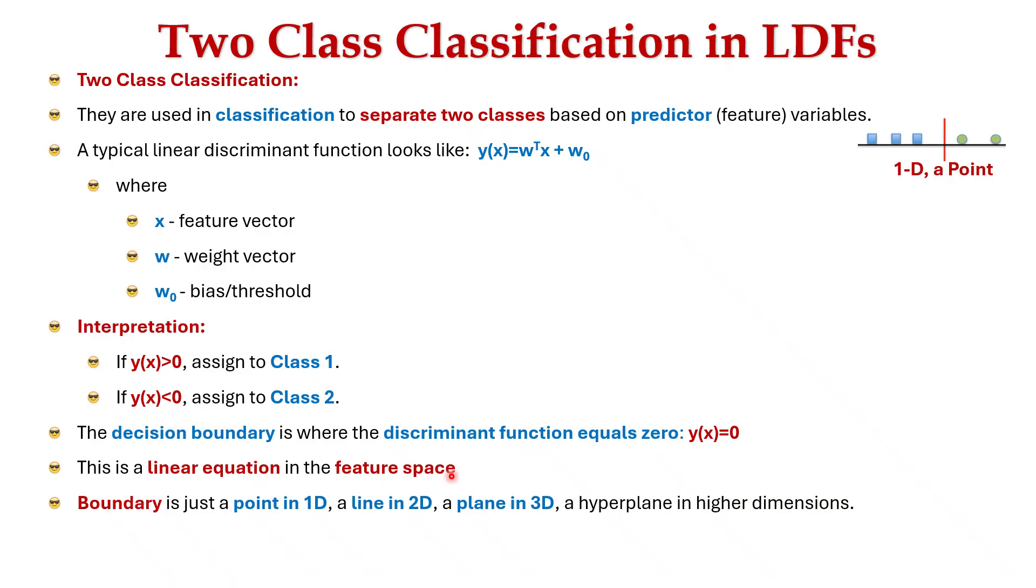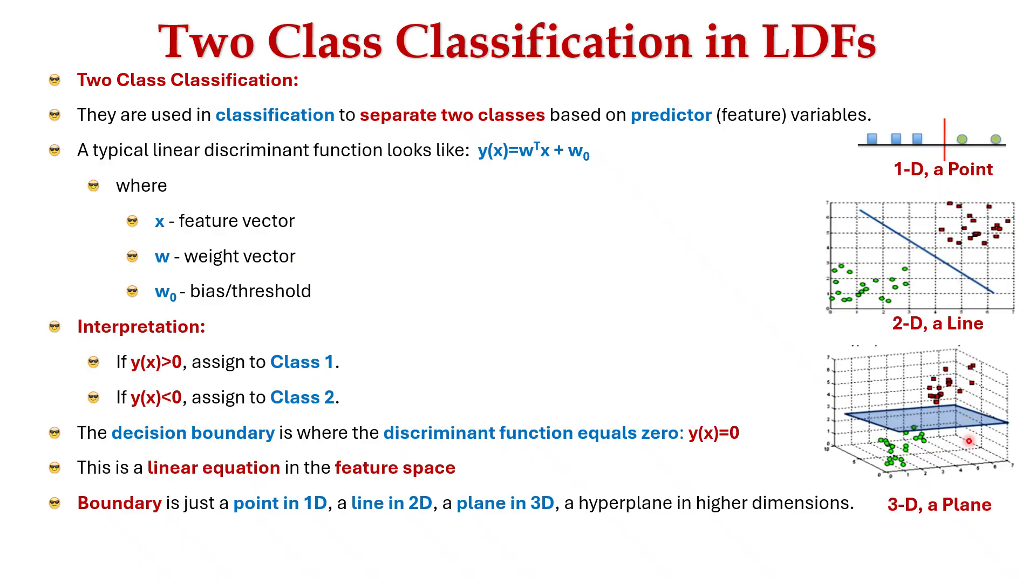A boundary is just a point in one dimension as shown in this figure. Similarly, a boundary is just a line in two dimensions as shown in this figure. A boundary is a plane in three dimensions as shown in this figure, and a hyperplane in higher dimensions. The boundary divides the feature space into regions that assign to different classes.